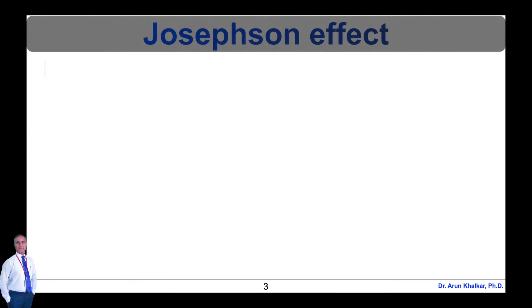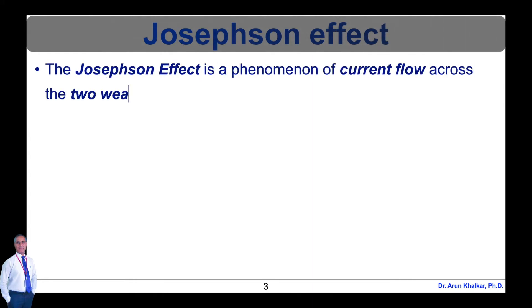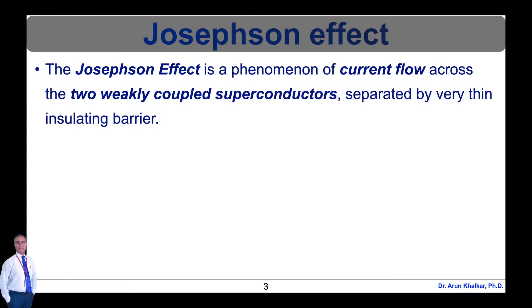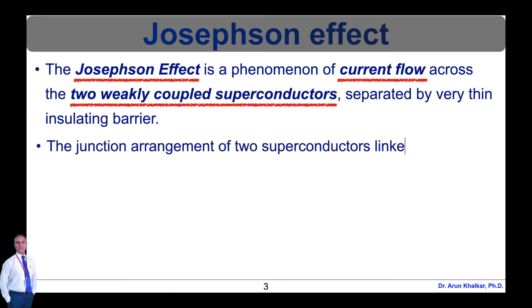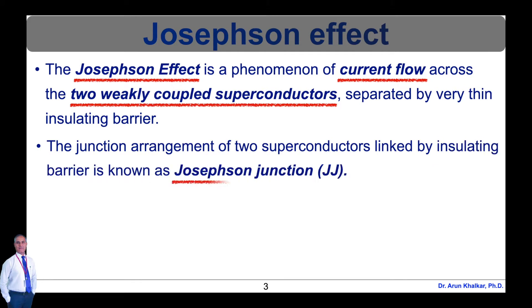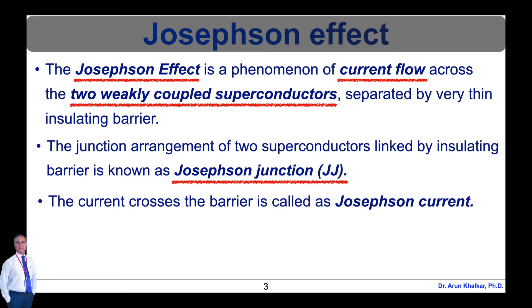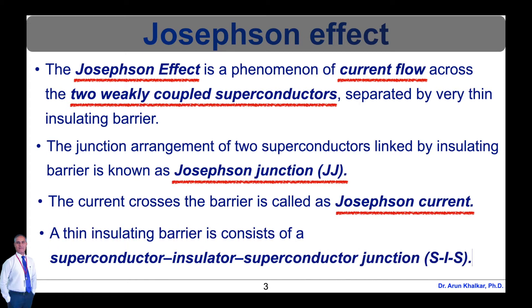The Josephson effect is an example of a macroscopic quantum phenomena. It is named after the British physicist Brian David Josephson, who predicted in 1962 the mathematical relationships for the current and voltage across the weak link. The Josephson effect is the phenomenon of supercurrent — a current that flows indefinitely long without any voltage applied across a device known as a Josephson junction, which consists of two or more superconductors coupled by a weak link. The weak link can consist of a thin insulating barrier known as a superconductor-insulator-superconductor junction or SIS junction.